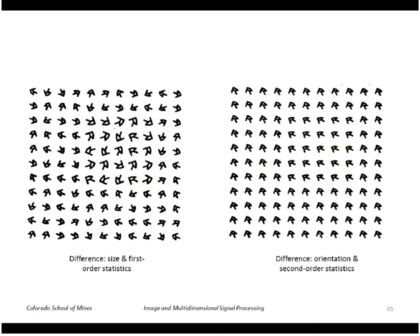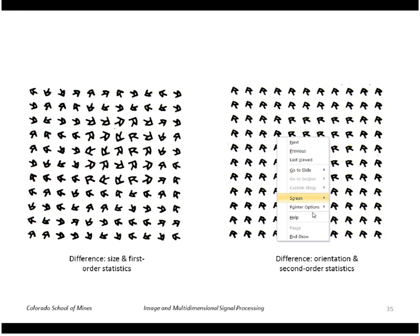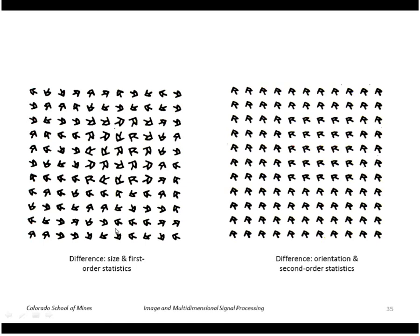Here's an example of a simple texture. This one has a region here that is different in size. Size is basically a first order statistic, right? Because if we were to throw darts at points within this part of the image, we would be more likely to hit a dark spot than we would out here. So this is easy to distinguish because it has different first order statistics.